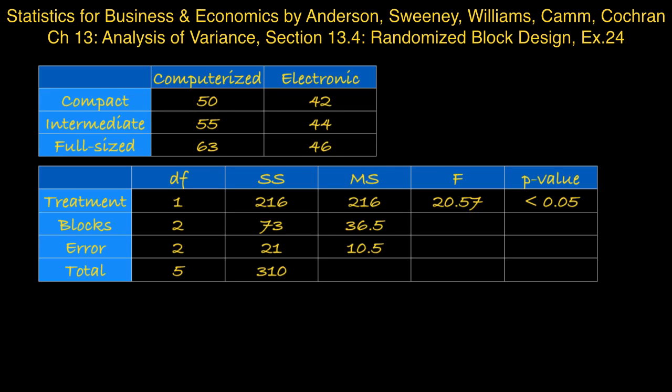Next, the mean squares. That's the sum of squares divided by the appropriate degrees of freedom. And they come to the values shown in the table.